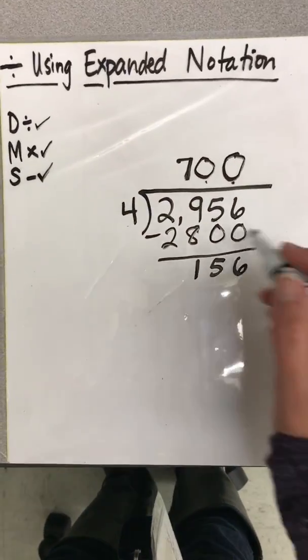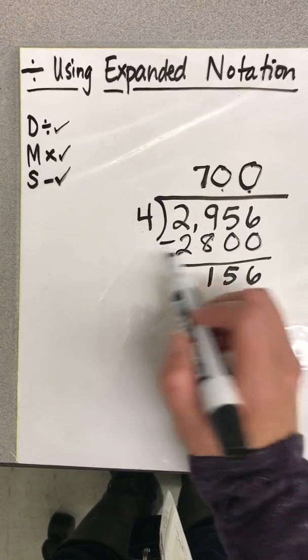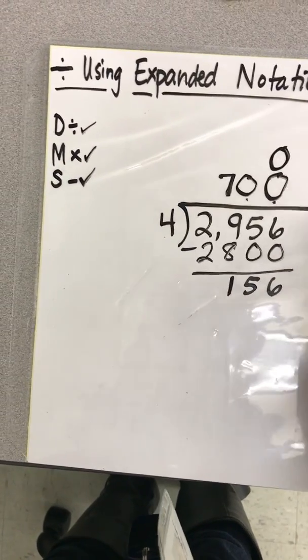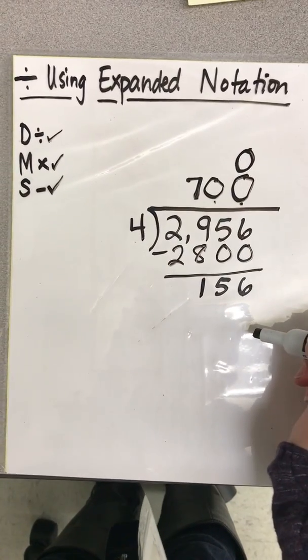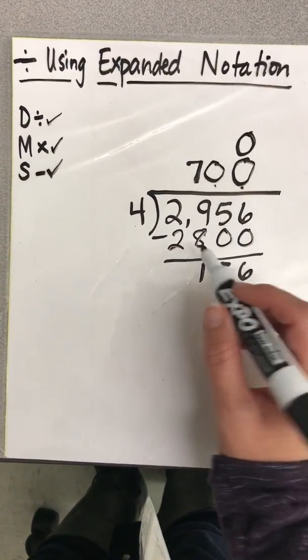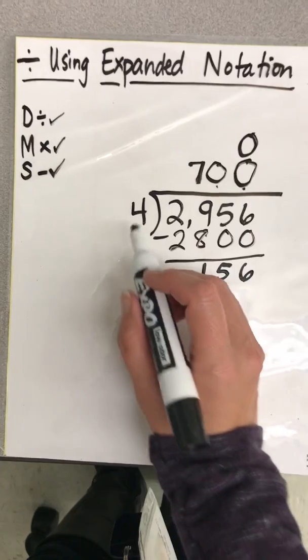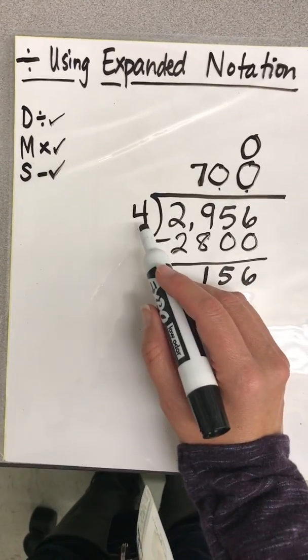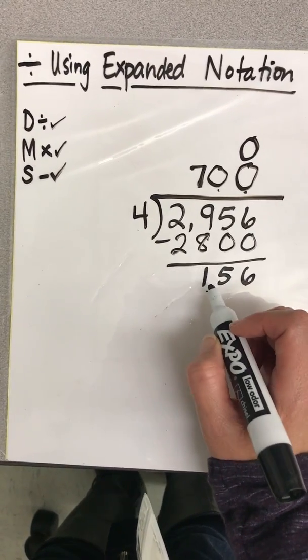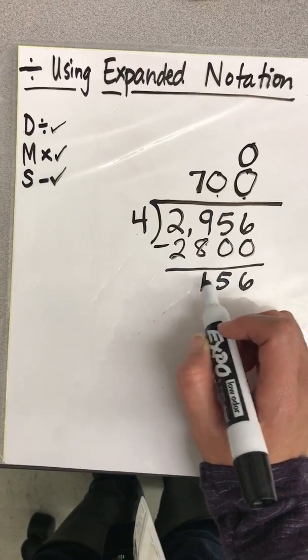So since we have some left over, we've got to divide again. And now we're asking how many groups of ten fours can fit into 156. And again, this number is a little bit large. So let's just focus on the 15. Since we know four cannot fit into one, we're just going to ask how much is 15 divided by four. And 15 divided by four, that would be three.